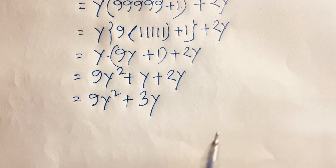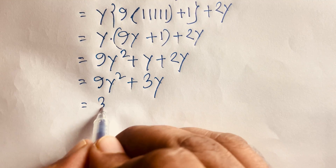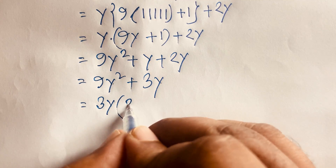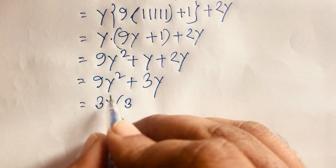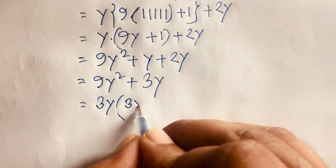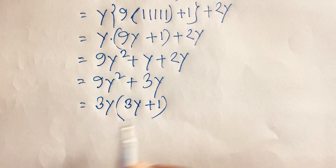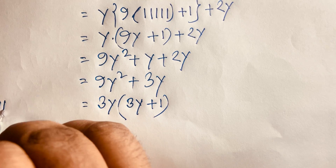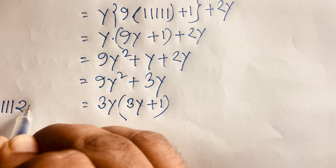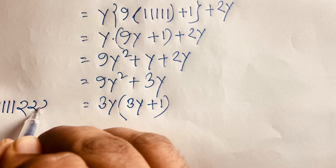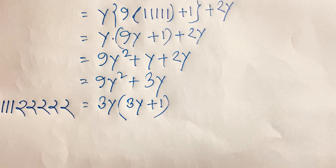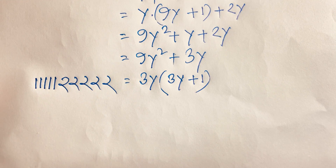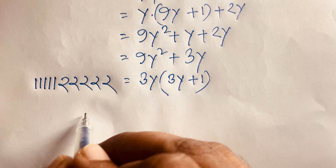Then this equation becomes 9y² + y + 2y, so it will be 9y² + 3y. At this moment I can say 3y is common, so 9y² divided by 3y gives 3y plus 1. So this is the value of 11111 times 22222.